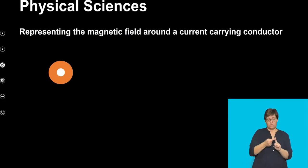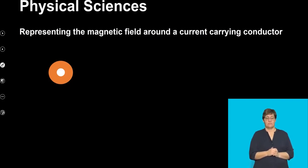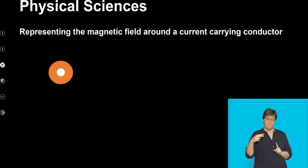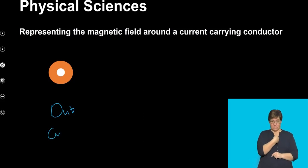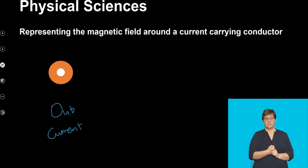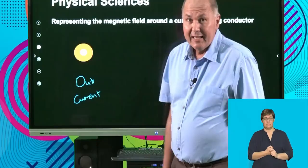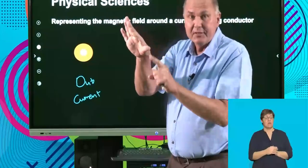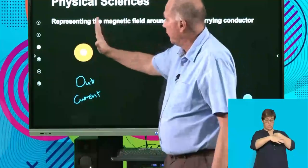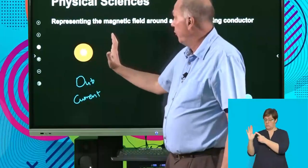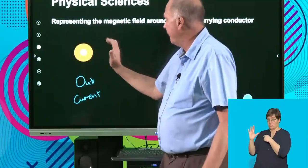The orange circle represents a piece of copper wire cut in cross-section. The dot tells us the current is coming out. The thumb tells us the direction — if the current is coming out, the thumb must be pointing out of the board. In which direction will the curl of my fingers be going?